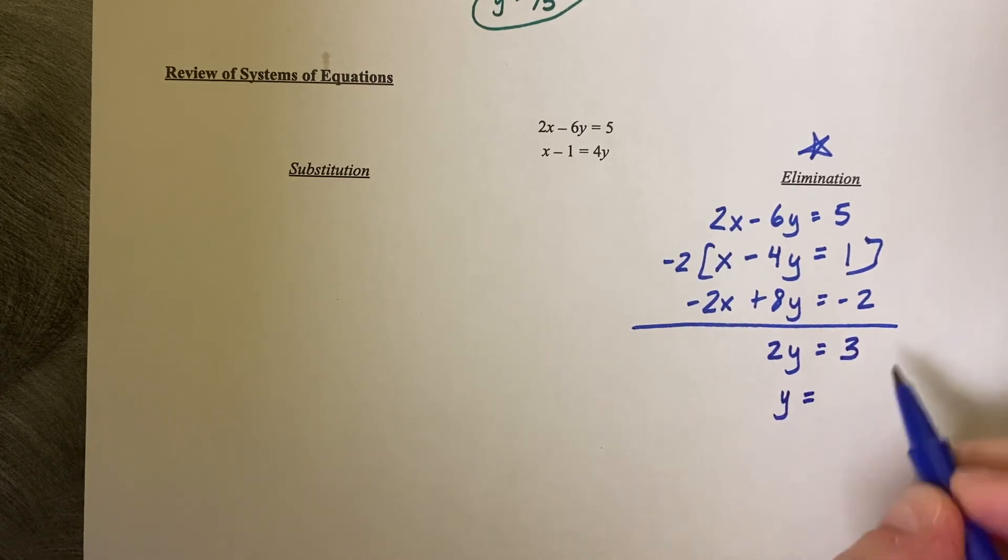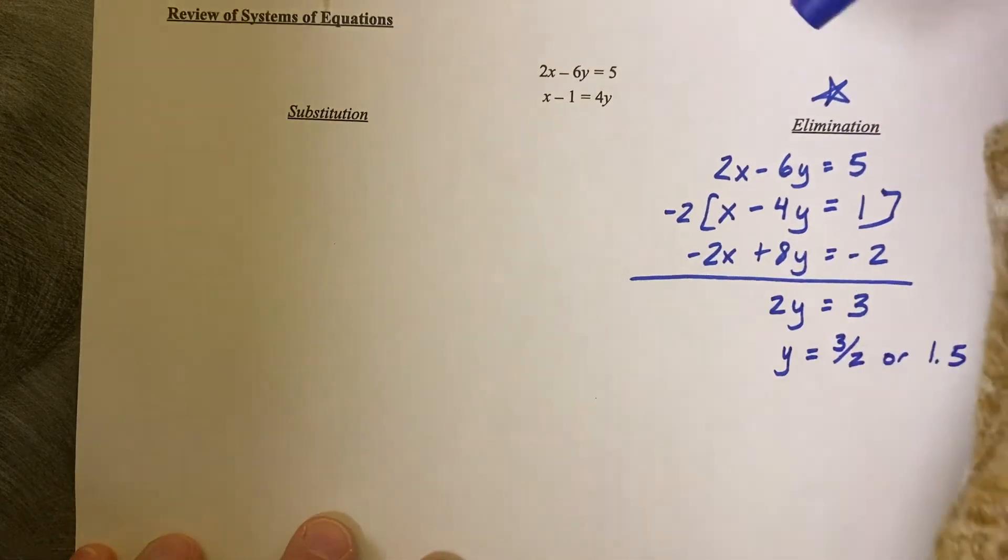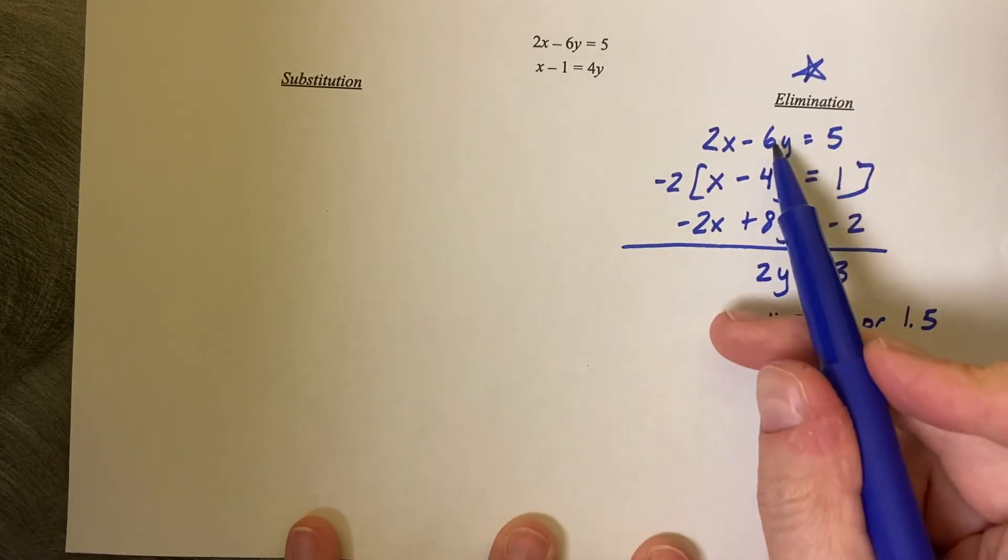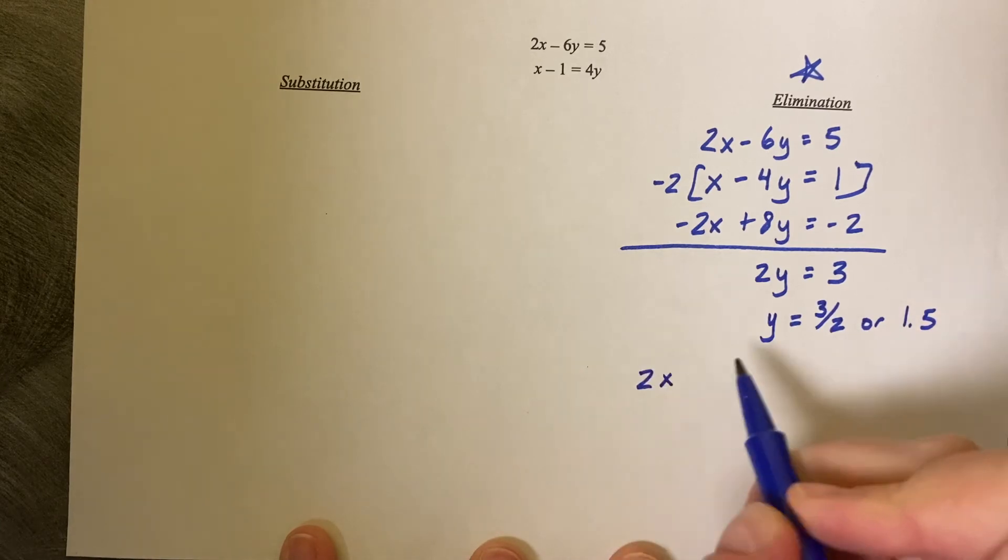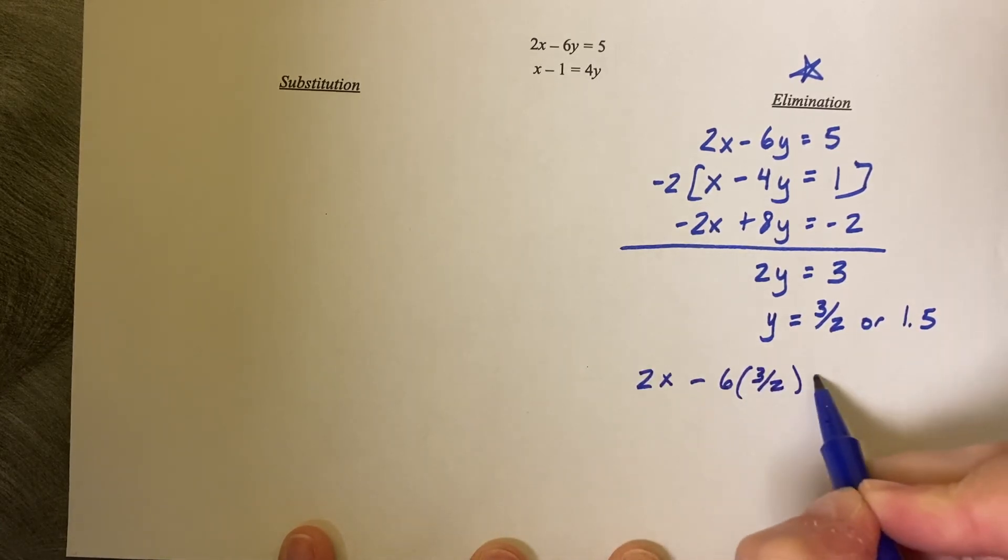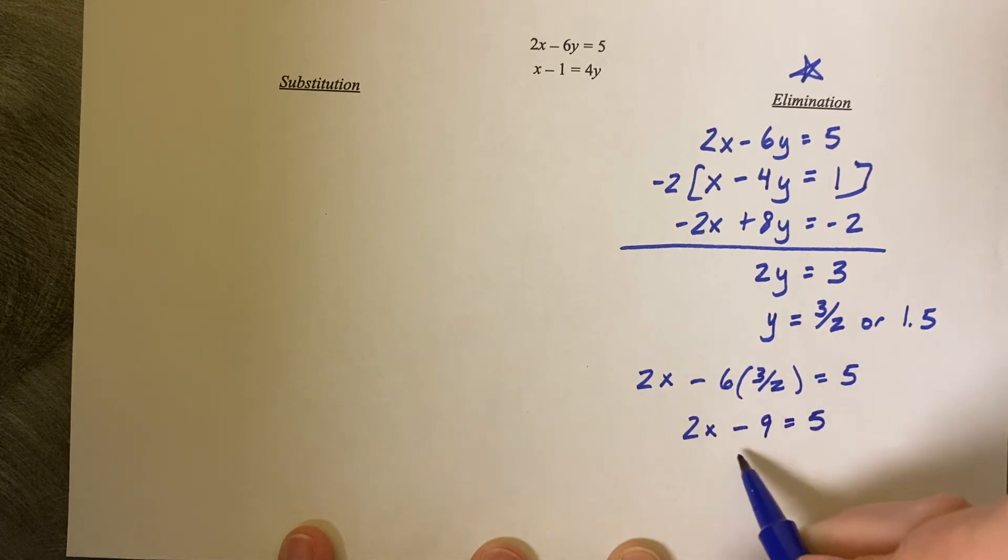Divide by 2 so Y equals 3 halves or 1.5 whichever you prefer. And then you plug it back in to get your X value so we're going to use either one and I'll just use the top one. 2X minus 6 times 3 halves equals 5. 2X, 6 times 3 is 18, 18 divided by 2 is 9, and then 2X equals 14 and X equals 7.